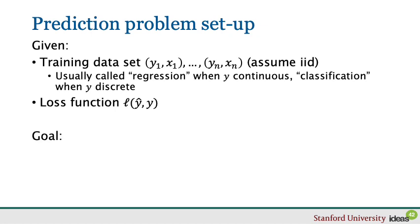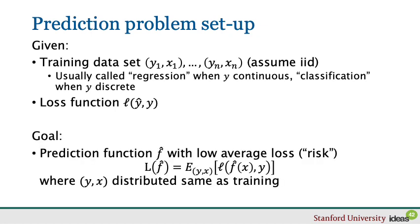Our goal is to predict the outcome y on a new data point drawn from the same distribution, based on the covariate x and using some prediction function f-hat, in a way that the average loss is as small as possible.